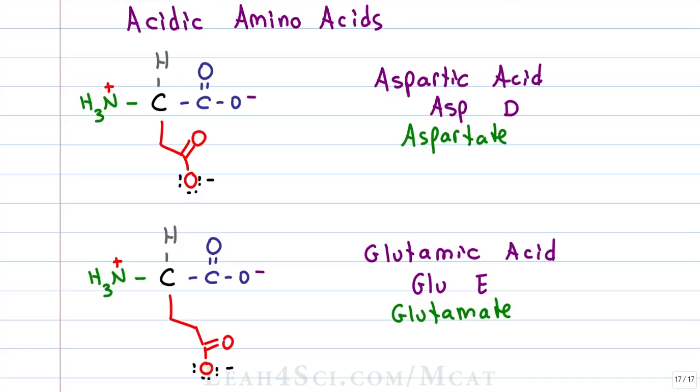And don't forget, these are intermediates in that transamination series we saw earlier: asparagine, aspartic acid, oxaloacetate; glutamine, glutamic acid, alpha-ketoglutarate.